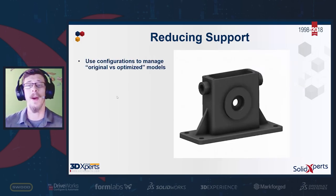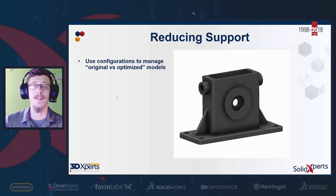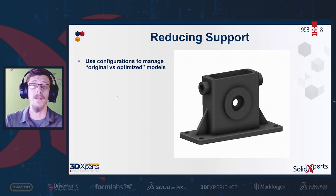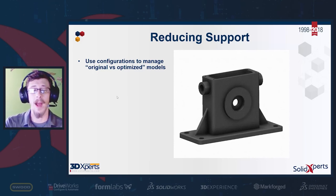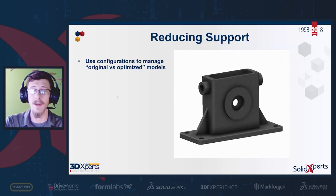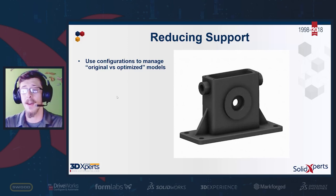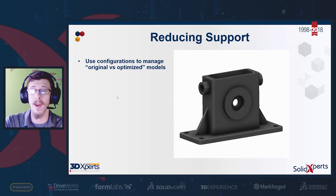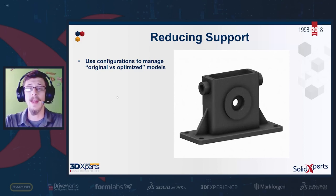When optimizing a model, it's important to keep the data somewhat separate. You can use multiple files, multiple assemblies, or — my preferred method — configurations. This lets you keep the original data in its before state and have an optimized after configuration, so you can go back and forth and see changes in material, strength, or simulation data.